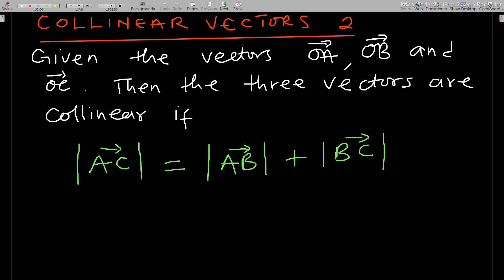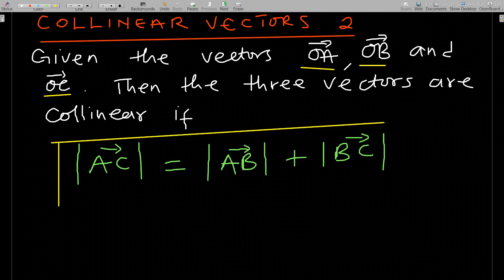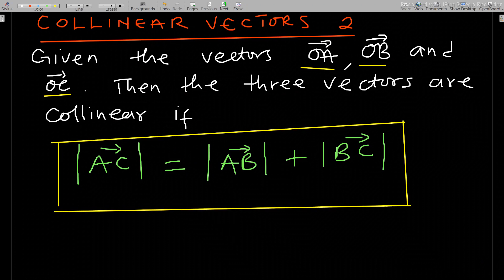Alright, let's start. Given the position vectors OA, OB, and OC — so it can be any three vectors — the three vectors are collinear if this statement holds: the magnitude of AC should be equal to the sum of the magnitudes of AB and BC.